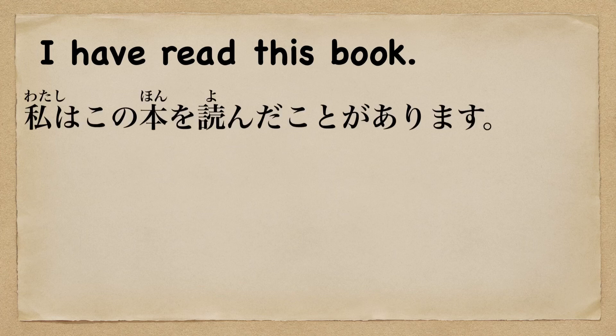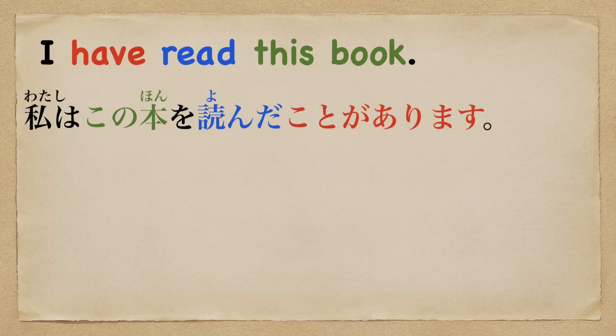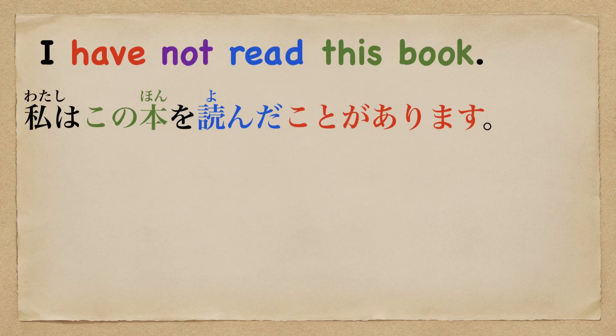Alright, next. From English to Japanese: I have read this book. 私はこの本を読んだことがあります. So just change masu to masen. Please check this video.